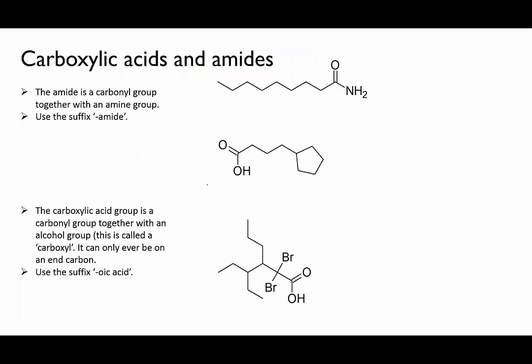Let's try some examples. This molecule at the top is clearly an amide, so we count the longest chain and don't forget to include the carbon that is part of the amide group — it is part of the main chain. There are nine carbons, so it's based on nonane, and to indicate the presence of the amide group we change the suffix to give nonanamide.